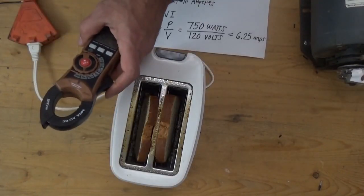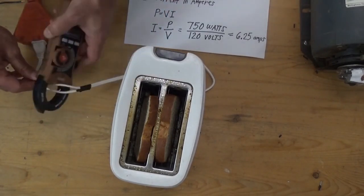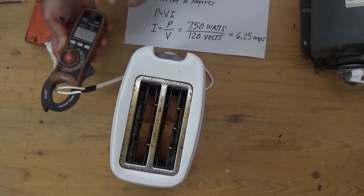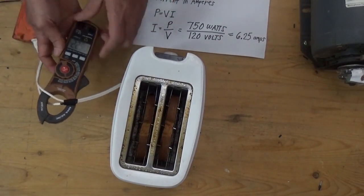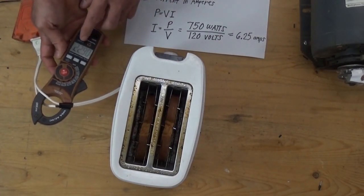When using a clamp ammeter, do not clamp it on two wires. See here, we have zero current. Let's clamp it on one wire. See, our current is 6.22 amperes.